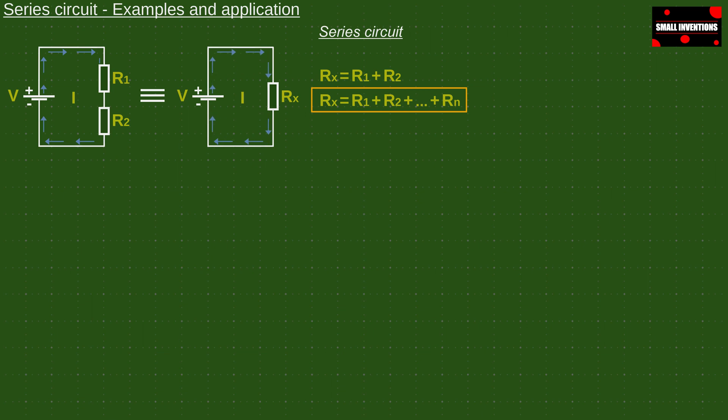Now that we know the total resistance, we use Ohm's law to calculate the current of the series circuit.